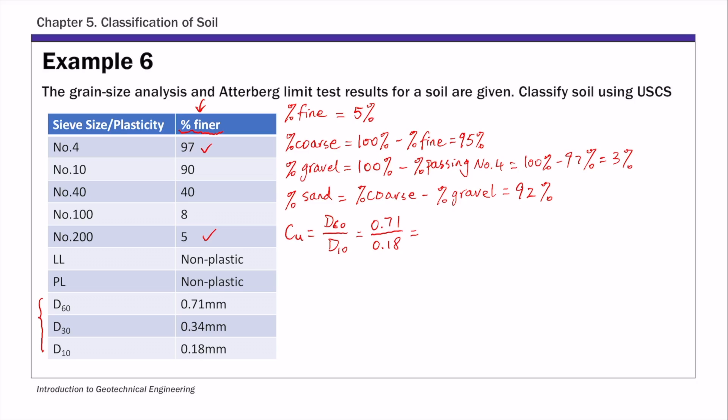And then the Cc value, coefficient of gradation, is d30 squared over d60 times d10. And if you plug in these numbers, 0.34 squared over 0.71 times 0.18, that gives you a value of 0.91.